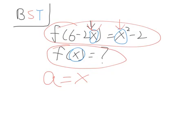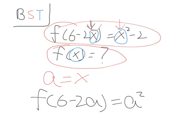And I'll rewrite the function to f of 6 minus 2a equals a squared minus 2. That's much more clear.